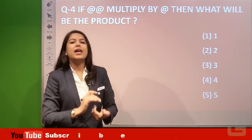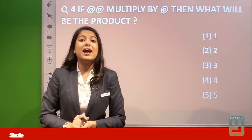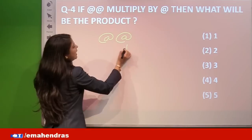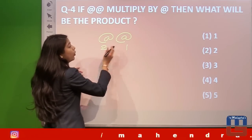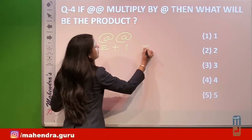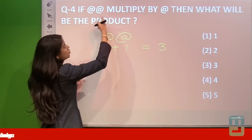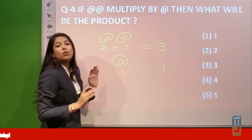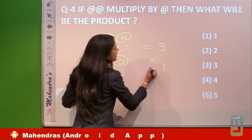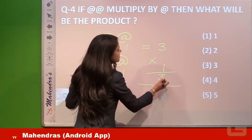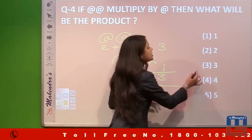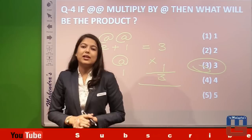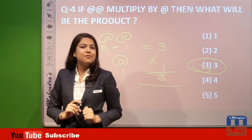Question 4: if @@ is multiplied by @, what is the result? @@ uses series 1 and 2, so 1 + 2 = 3. @ uses only 1, so its value is 1. Therefore 3 multiplied by 1 = 3. Option number 3 is the answer.